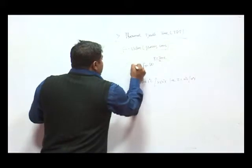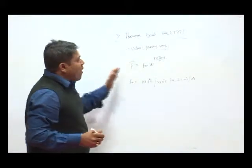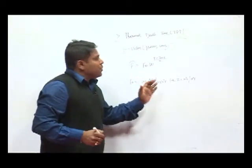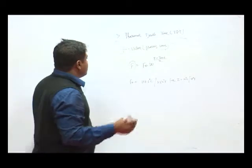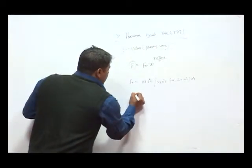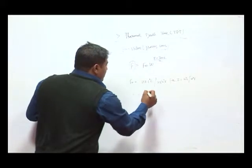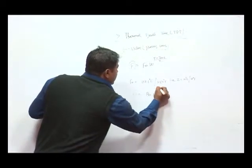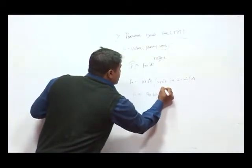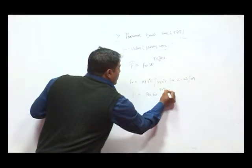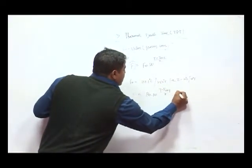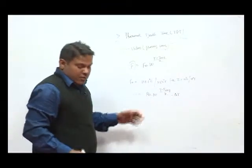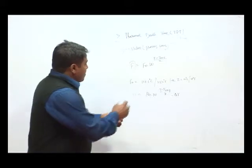So using this, we can calculate the F value of different microorganisms. And according to that, we can control the heat transfer process. So F is equal to F naught 10 to the power T minus T 121.1 upon Z into del T. So del T is the time difference for the different combination process.